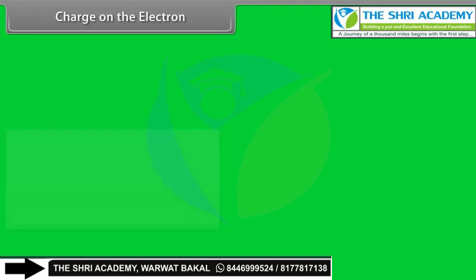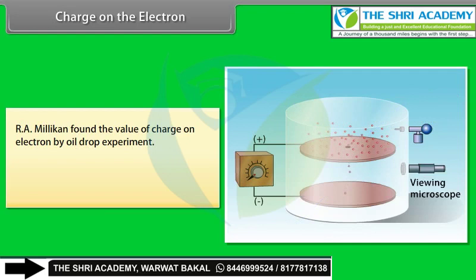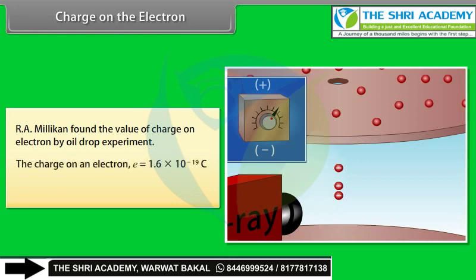Charge on the electron: R.A. Millikan found the value of the charge on the electron by the oil drop experiment. Oil droplets enter through a small hole and fall between two charged plates, observed through a microscope. X-rays ionize air molecules, and electrons may be absorbed by droplets. The charge on an electron e = 1.6 × 10⁻¹⁹ coulomb. The mass of the electron me = 9.31 × 10⁻³¹ kilogram.